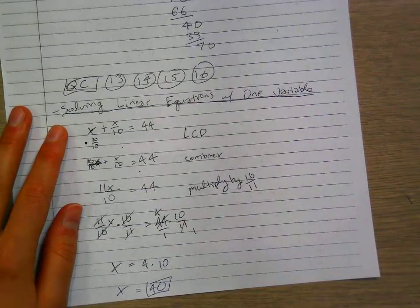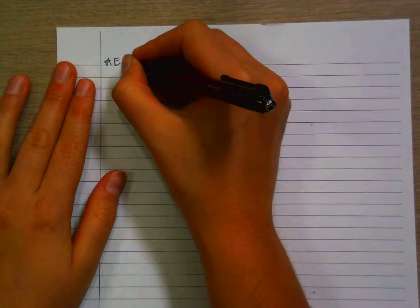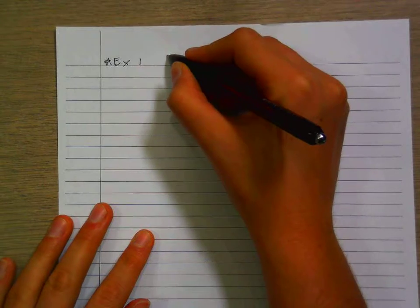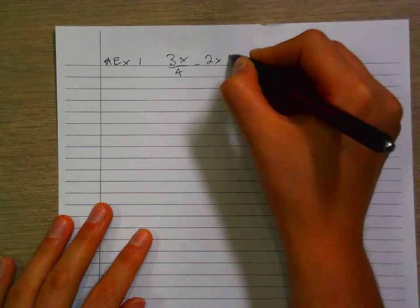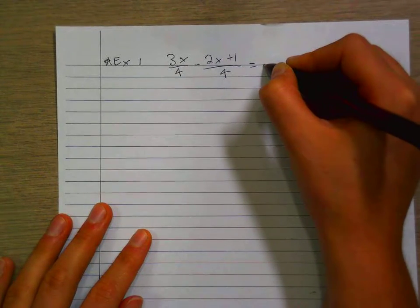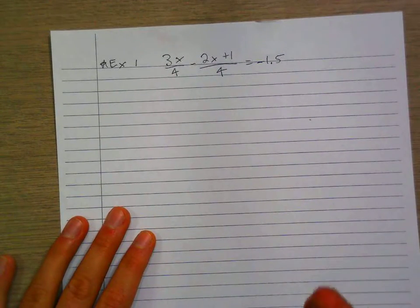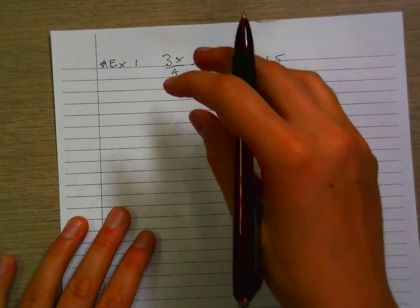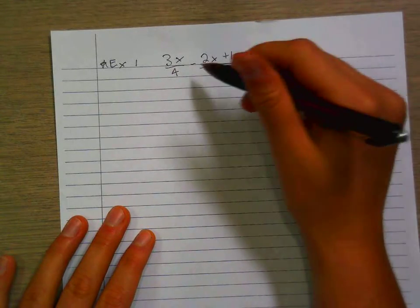And that's your answer. Let's try an example problem. Example 1: 3x over 4 minus 2x plus 1 over 4 equals negative 1.5. We're going to learn to solve for x. First thing you want to do is rewrite this as just one fraction. We already have the least common denominator.